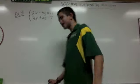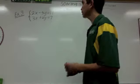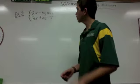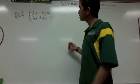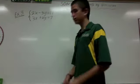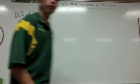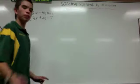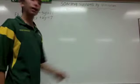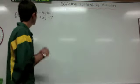For our third example we're going to do 2x minus 5y equals 11 and 3x plus 2y equals 7. We're going to start by multiplying the first equation by negative 3. Let's see how this goes.